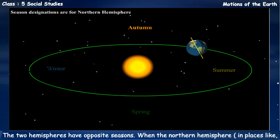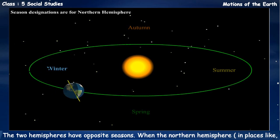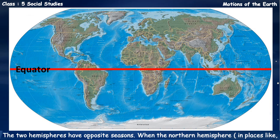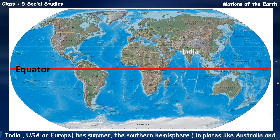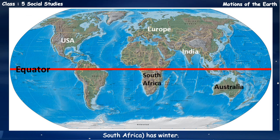The two hemispheres have opposite seasons. When the Northern Hemisphere, in places like India, the USA, or Europe, has summer, the Southern Hemisphere, in places like Australia and South Africa, has winter. When the Southern Hemisphere has summer, it is winter in the Northern Hemisphere.